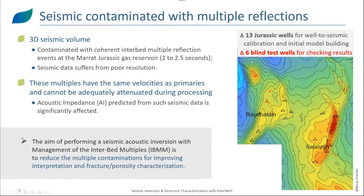Therefore, the acoustic impedance that we can predict with such seismic data is significantly affected by the multiples. In our study, we have 13 Jurassic wells which are going to be used for well-to-seismic calibration and the initial model building. We also have six blind test wells for checking the results. In order to overcome the difficulty and the quality of our seismic data, we will perform a seismic inversion with management of interbed multiples in order to reduce the multiple contamination, improve interpretation, and improve the characterization of fracture and porosity.